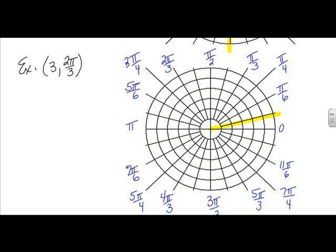So if I'm going to plot the point (3, 2π/3), I'm going to think about rotating around the angle 2π/3, and I'm going to think about where that terminal side is, and then I'm going to count out that ray positive 3 units. So 1, 2, 3. There's my point. Let's call that point A.